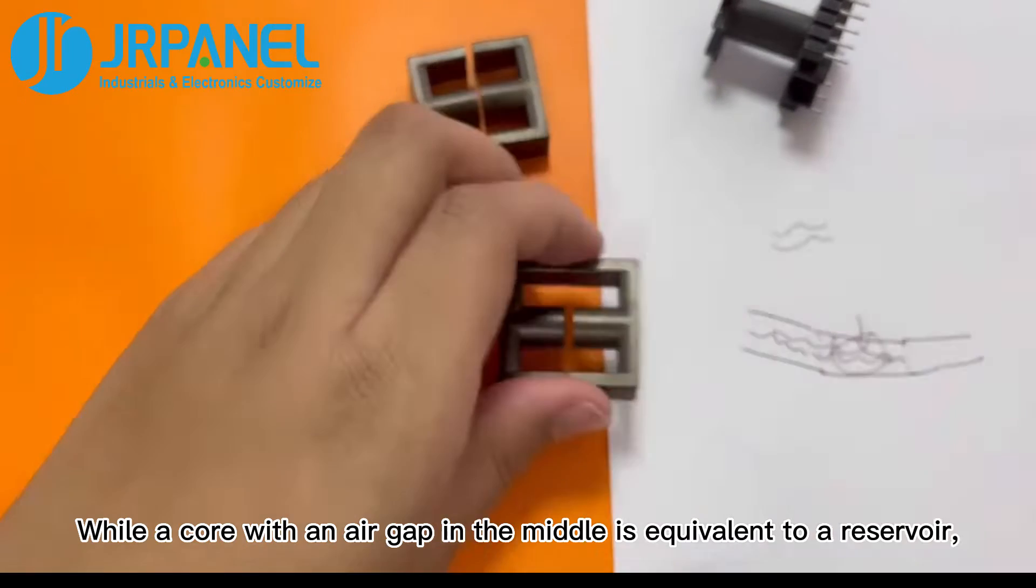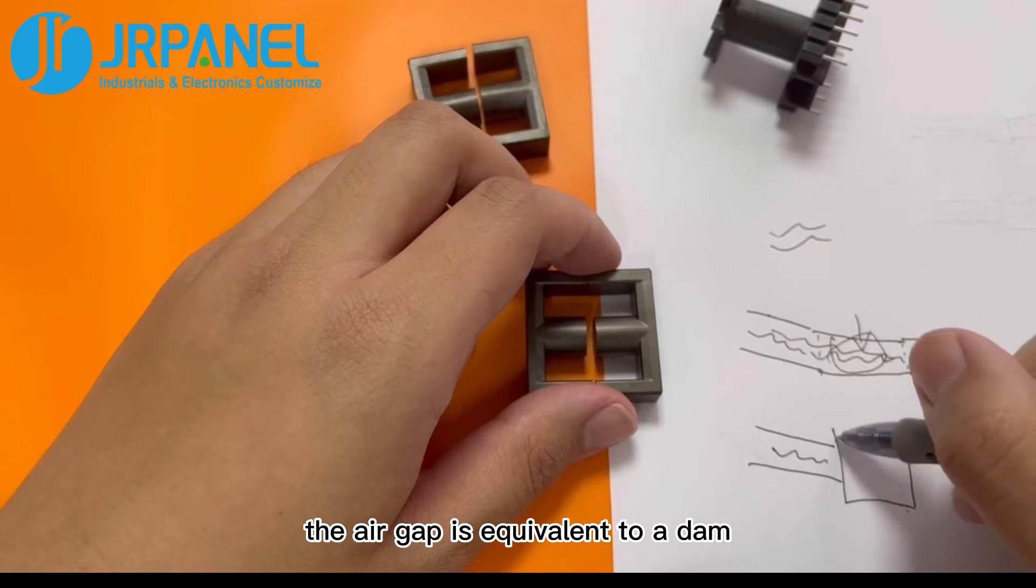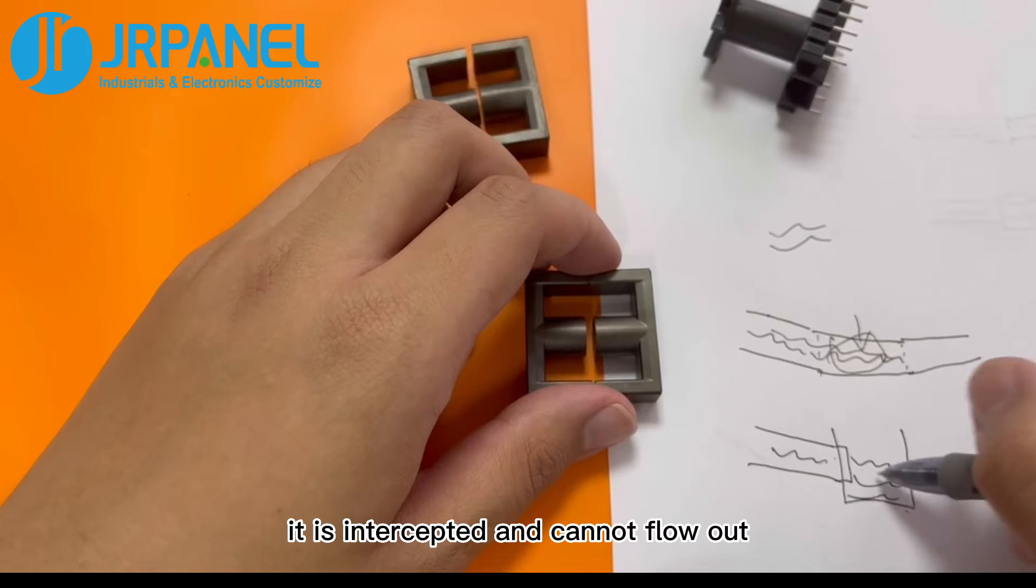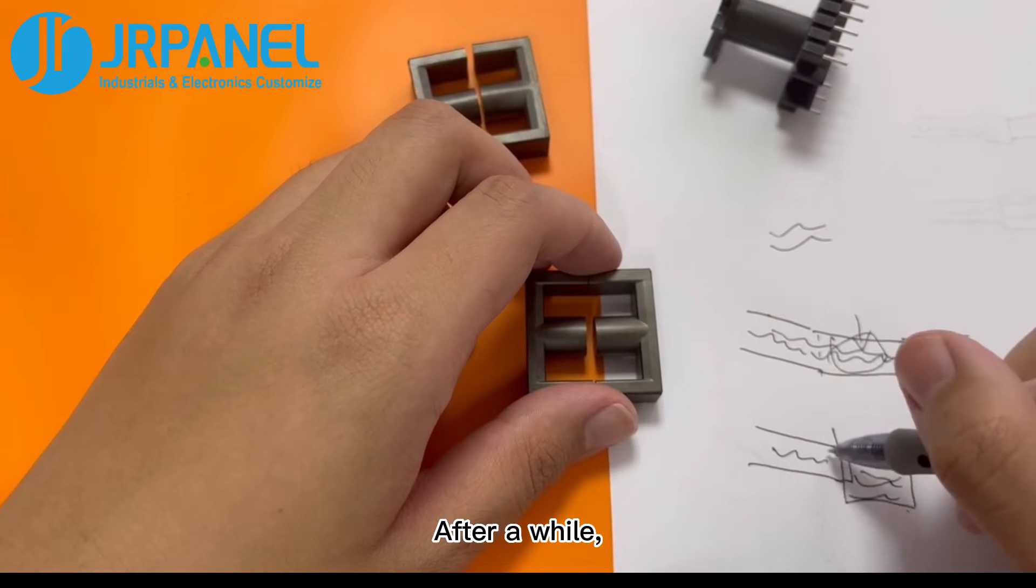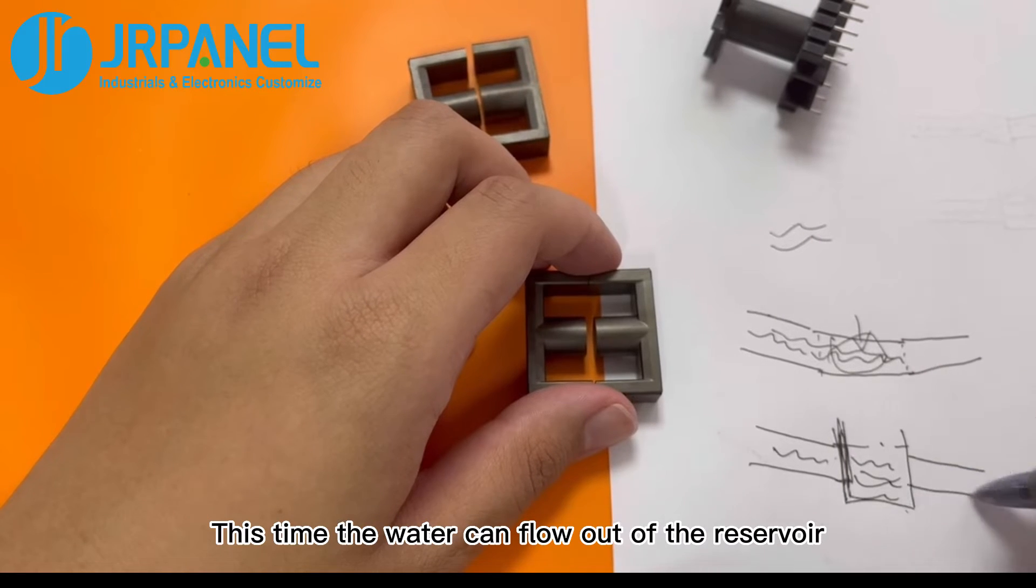While a core with an air gap in the middle is equivalent to a reservoir, the air gap is equivalent to a dam. When the water comes in, it is intercepted and cannot flow out. After a while, we stop the water input and start to release the water. This time the water can flow out of the reservoir.